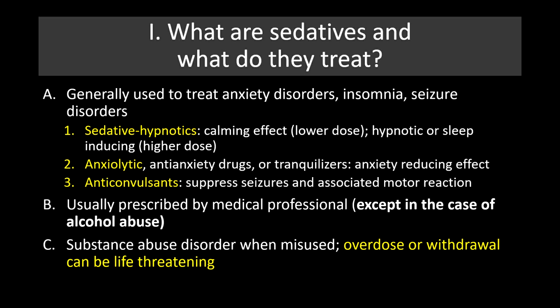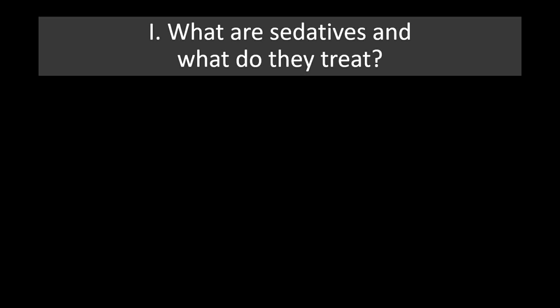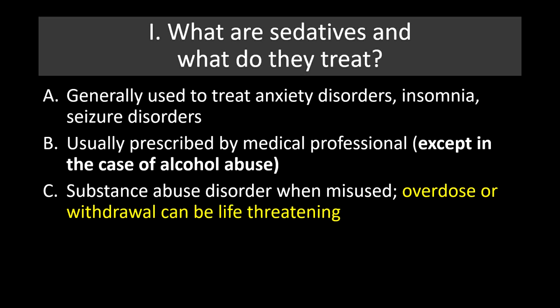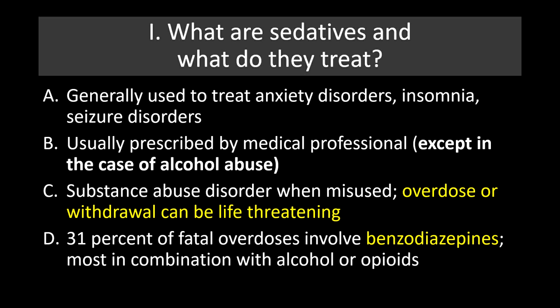These are an important class of drugs because they are often used and abused, and it's important for people to understand the risks. About 31% of fatal overdoses involve benzodiazepines, generally in combination with alcohol or other opioids. Benzodiazepines are one of the most commonly prescribed drugs in the United States — their use can be very effective, but we have to be cautious about excessive use.